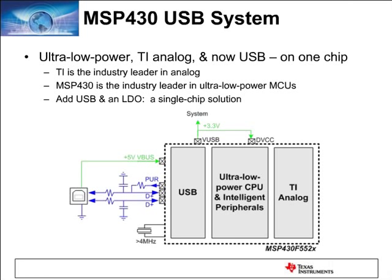MSP430 USB System. To meet the needs of the embedded market while providing an easy connectivity solution, MSP430 has introduced its first integrated USB SoC product, the MSP430F5529. The USB integration combined with the 5xx family's highly integrated analog, intelligent peripherals, and CPU capable of up to 25 MHz performance gives you an integrated and ideal solution that provides a complete embedded application.